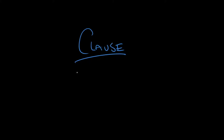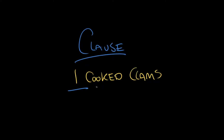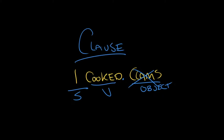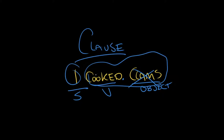A clause is the shortest possible proposition in grammar. So, for example: I cooked clams. You've got your subject here, which is 'I'. You've got a verb, which is 'cooked' — so S, V. And then we've got this object here, which isn't necessary for a clause. You could really just say 'I cooked,' and that would be a sentence. That's all that's required for a clause. You've got your subject and then you've got the predicate — but really, we can just say subject and verb. Those are the core requirements for a clause.